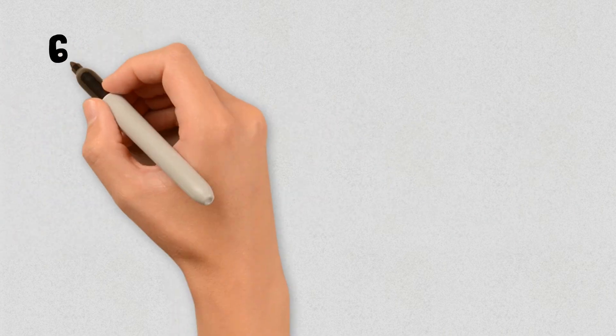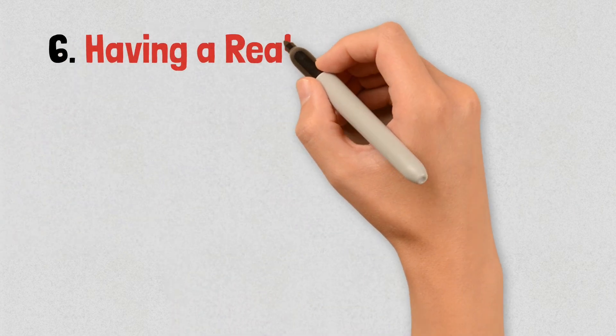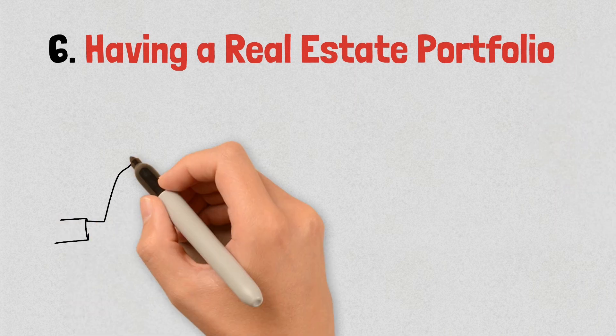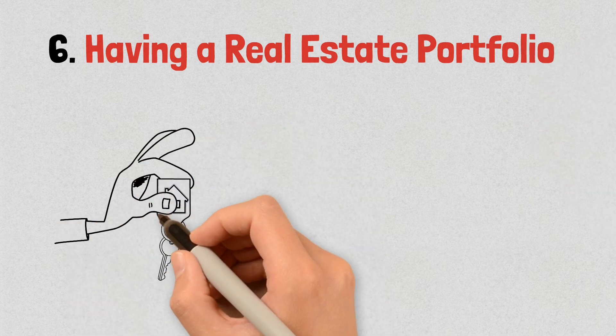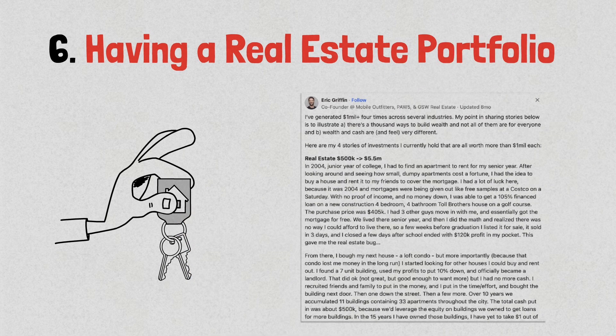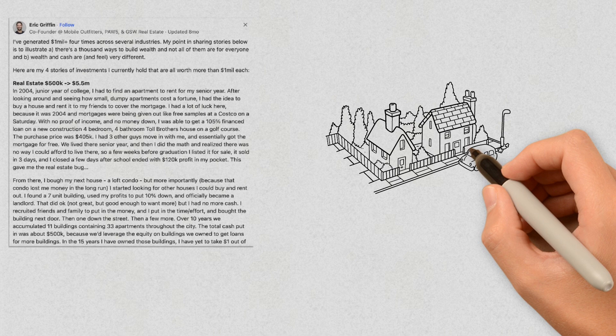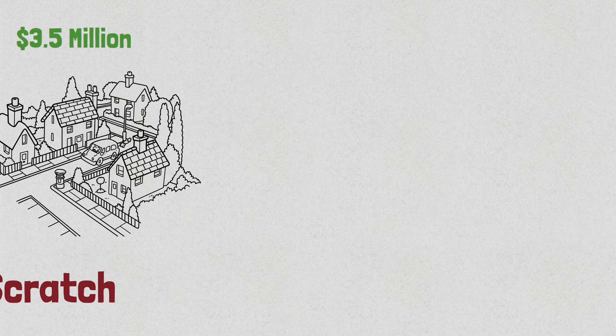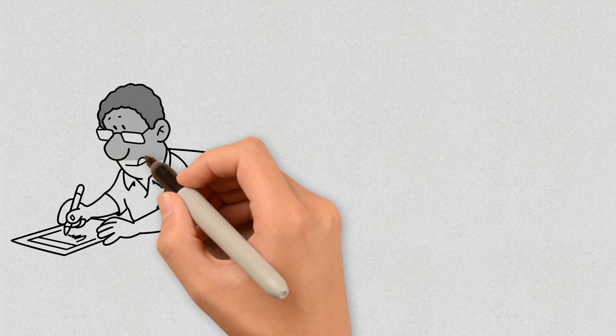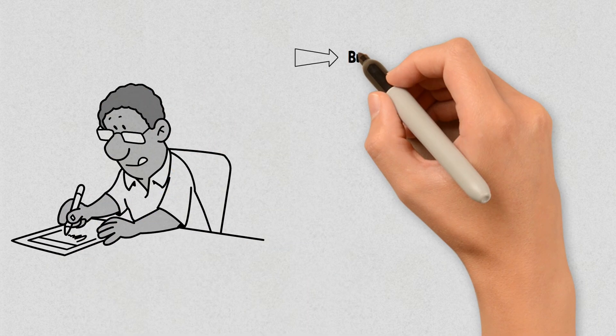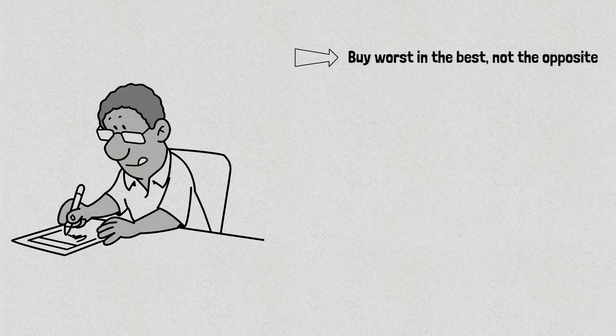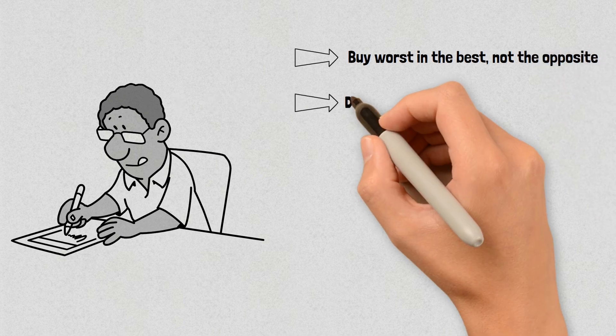The sixth most common way people made their first $1 million was by having a real estate portfolio. There is no shortage of successful Airbnb stories on the internet. The person who wrote the longest answer talks about how he accumulated 11 buildings worth $3.5 million starting from scratch. Here are some pro tips from one of the seasoned real estate investors. Buy the worst house in the best neighborhood, not the best house in the worst neighborhood.